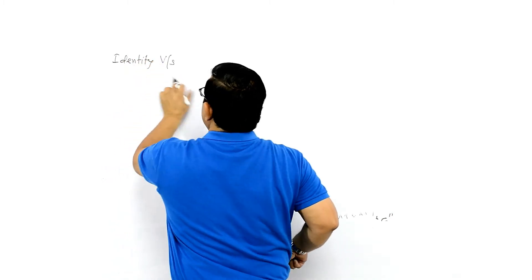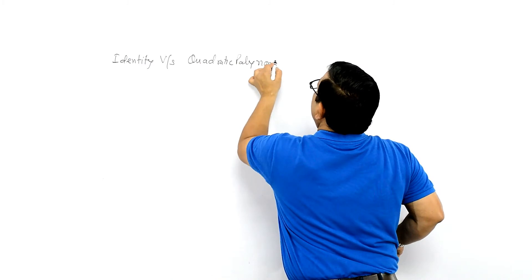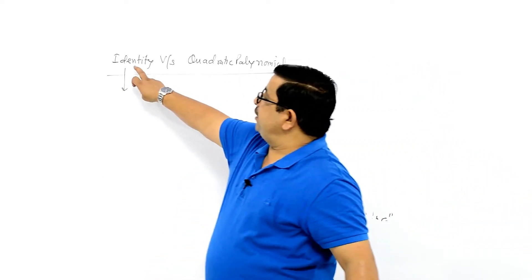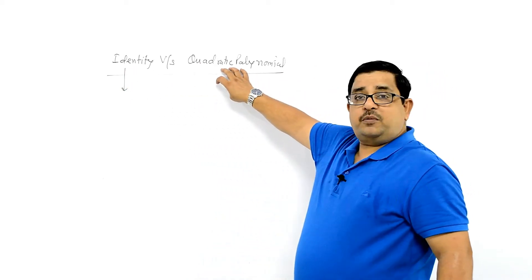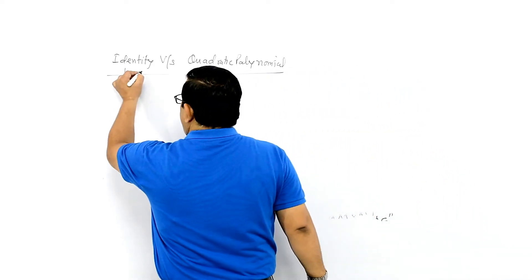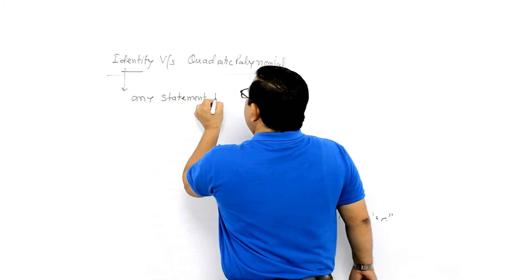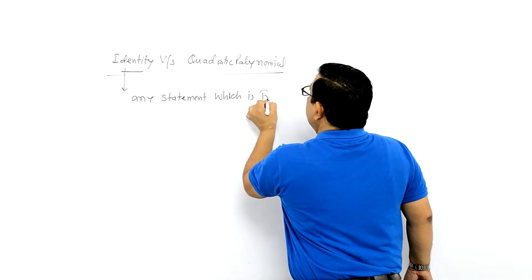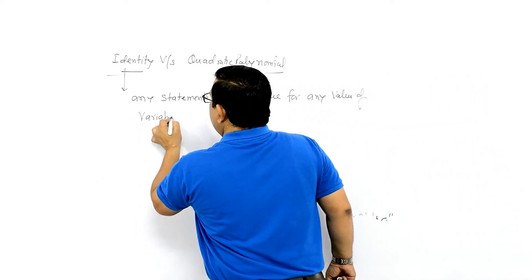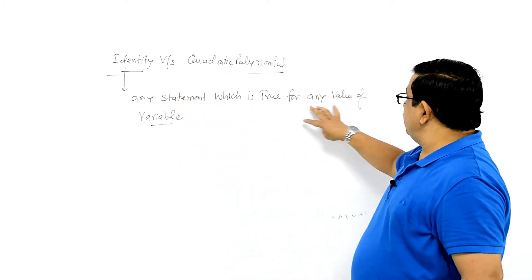Identity vs Quadratic Polynomial. Any statement which is true for any value of the variable is called an Identity. So it is a statement that is true for any value of the variable.